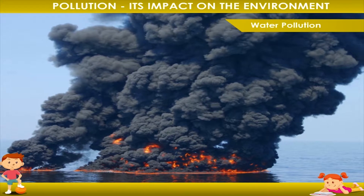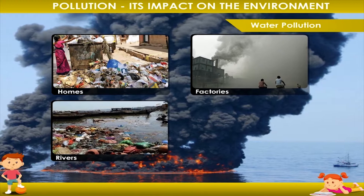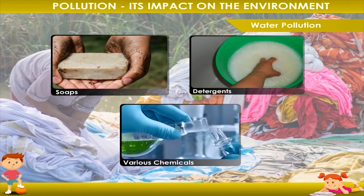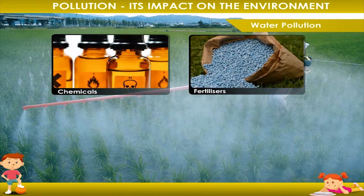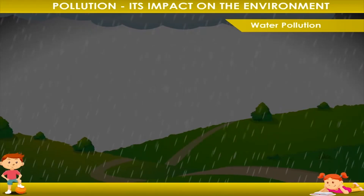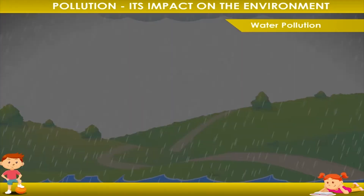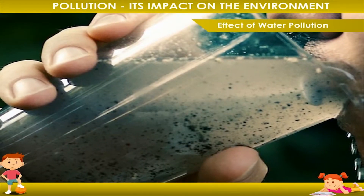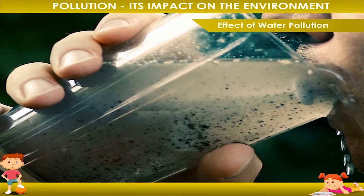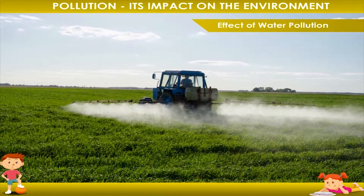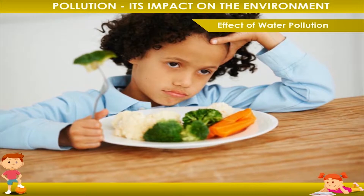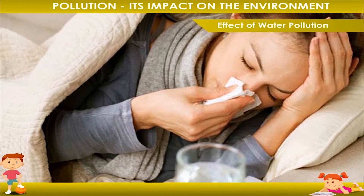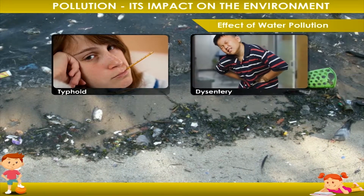Water pollution is caused due to the flow of dirty water from homes and factories into rivers and lakes. This water contains soaps, detergents, and various chemicals. Farmers also use fertilizers and pesticides for crops; when it rains, large amounts of these get mixed with clean water, polluting it. Effects of water pollution: drinking polluted water can cause deadly diseases. Harmful chemicals in dirty water also mix with plants — eating these plants may make us sick. Polluted water can cause liver damage (jaundice), and growth of germs causes typhoid, dysentery, and diarrhea.